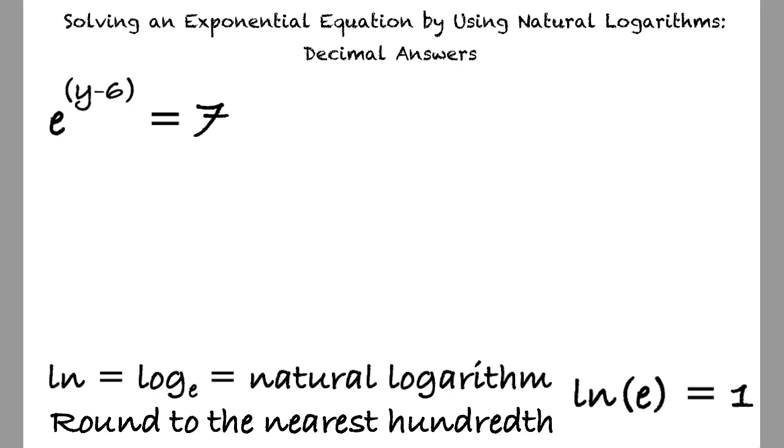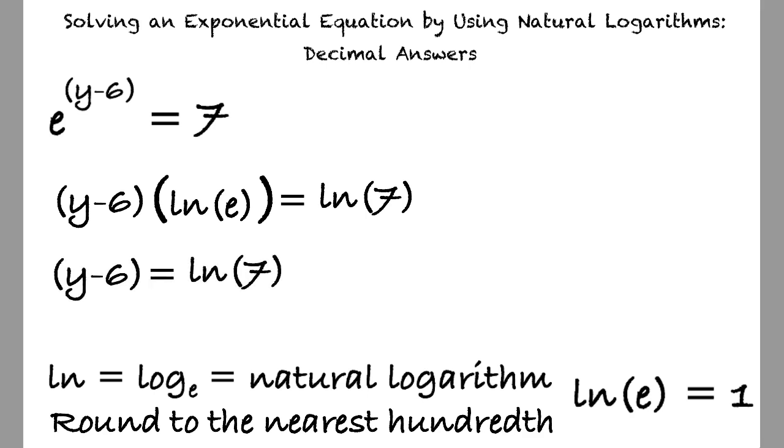First, we can take the natural logarithm of both sides of the equation, resulting in y minus 6 times the ln of e equals the ln of 7. Next, we can rewrite the equation as y minus 6 equals the ln of 7, since the natural log of e is equal to 1.